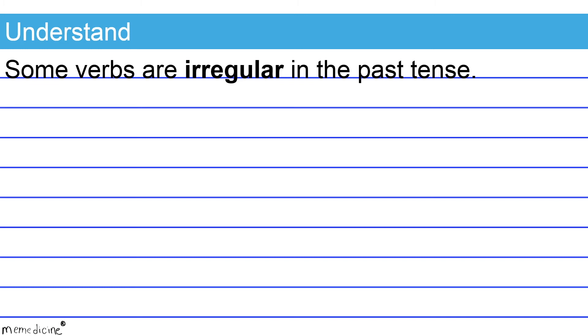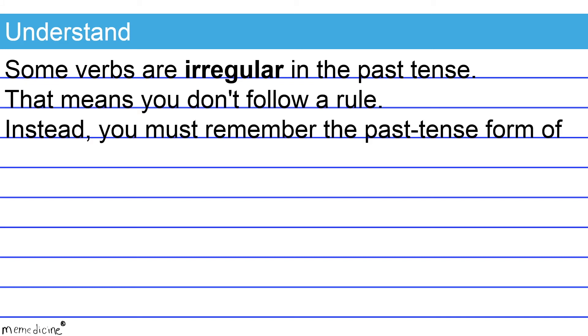Some verbs are irregular in the past tense. That means you don't follow a rule. Instead, you must remember the past tense form of the verb.